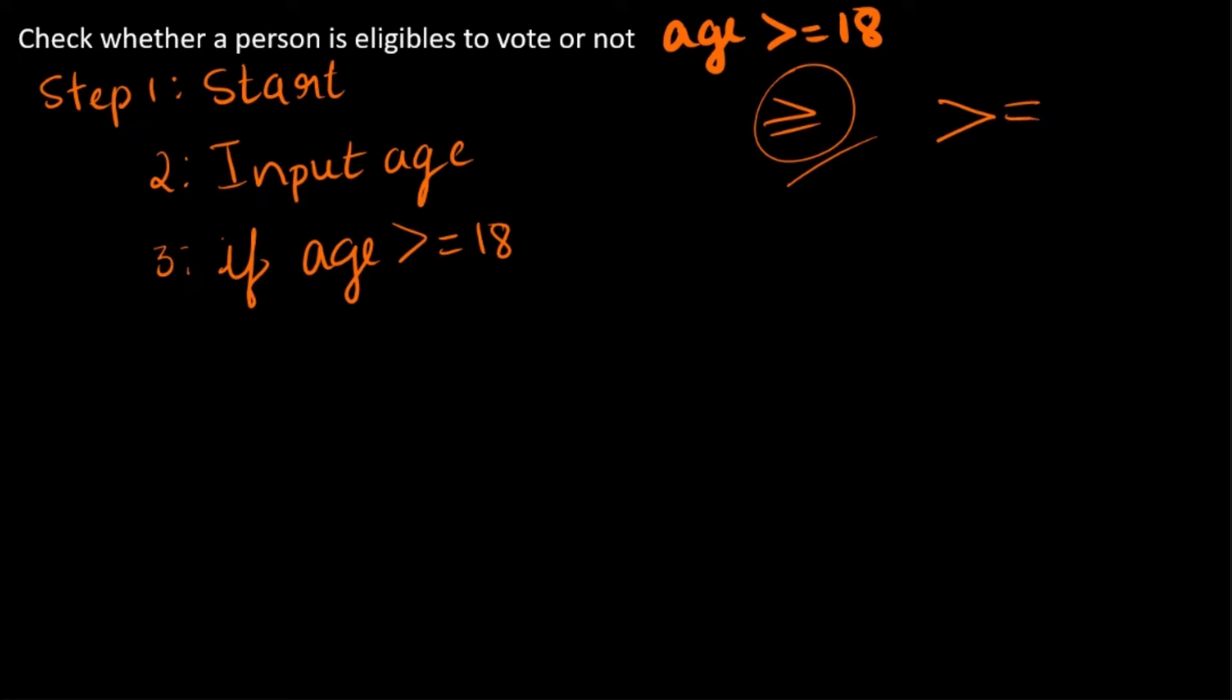Print eligible to vote. It's quite easy, you guys can understand it. Next, if this isn't the case, if this is false, then else print not eligible to vote.